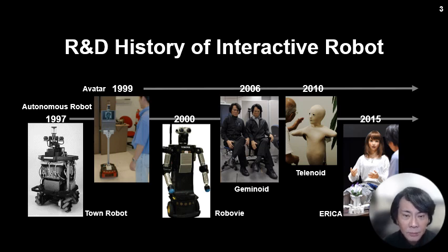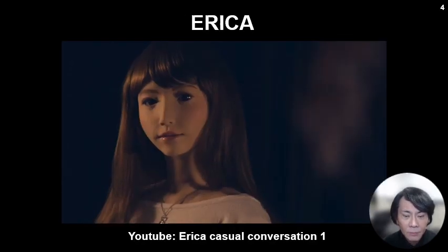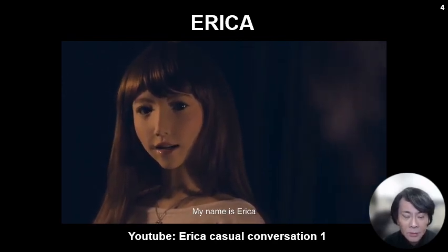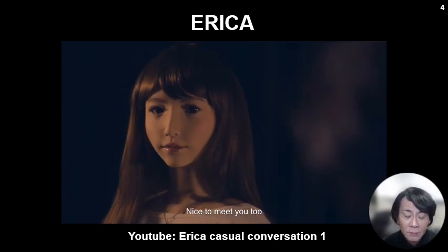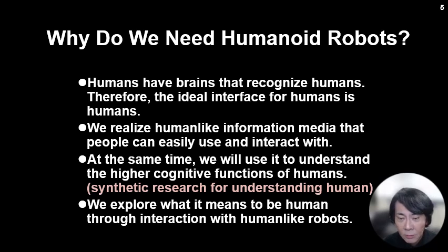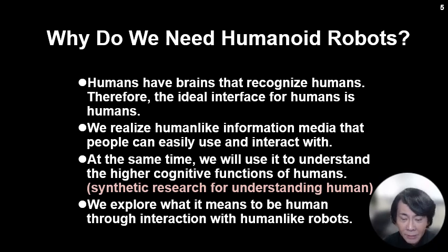Recently I'm focusing on avatar development. This is one example of my robot, and I believe this is one of the most human-like robots. People always ask me: why do we need human-like robots? The answer is simple. The human has a brain that recognizes humans. Therefore, the ideal interface for the human is humans. So we realize human-like information media that people can easily use and interact with.